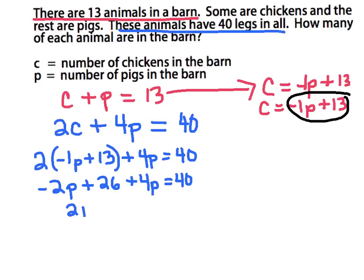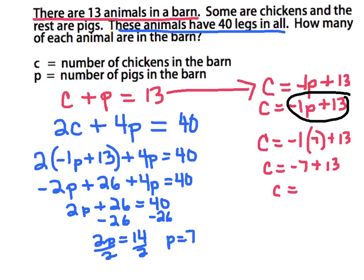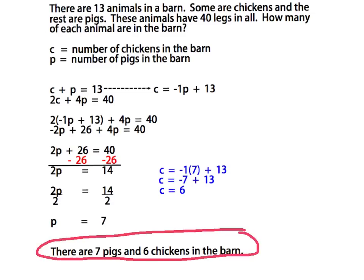Combining like terms, I'll get 2p plus 26 equals 40. Now I'll subtract 26 on both sides to get 2p equals 14. Dividing both sides by 2, I find that p equals 7 — so there are 7 pigs in the barn. I can take p equals 7 and substitute it back to find c: negative 1 times 7 plus 13 equals 6. So my last step is to write my answer in a sentence: There are 7 pigs and 6 chickens in the barn.